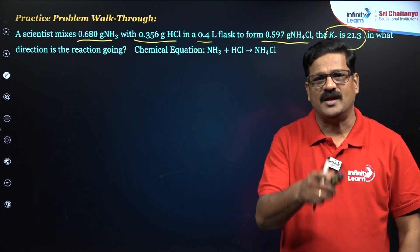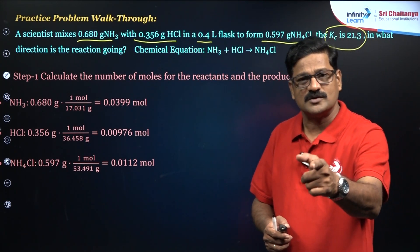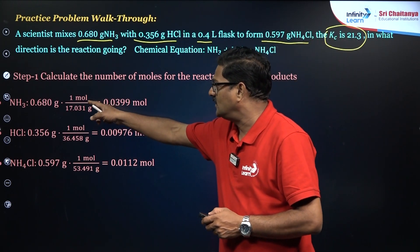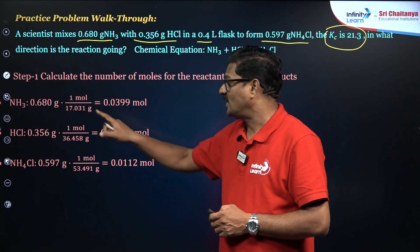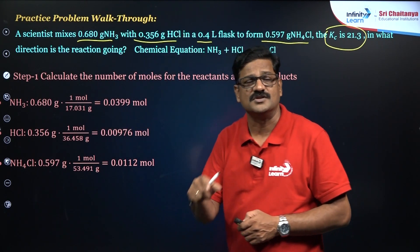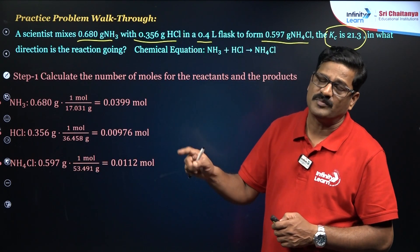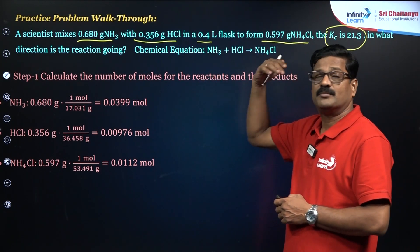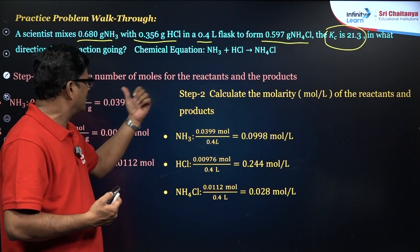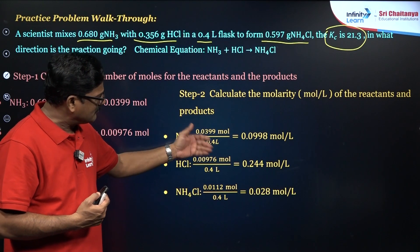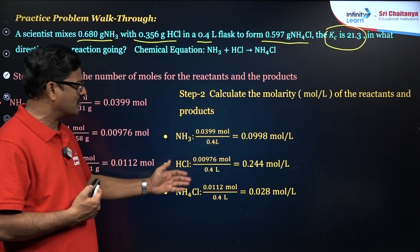To solve this, compare the KC and QC values. To calculate QC, you need the active masses (molar concentrations). Number of moles = mass ÷ molecular mass. For NH₃: 0.680 g gives 0.0399 moles. For HCl: 0.356 g gives approximately 0.00976 moles. For ammonium chloride: 0.597 g divided by its molecular mass. Then divide each by the volume of 0.4 liters to get active mass in mol/L.